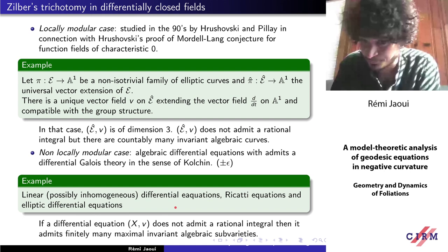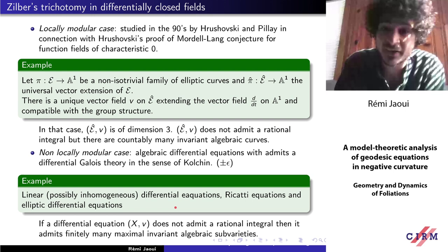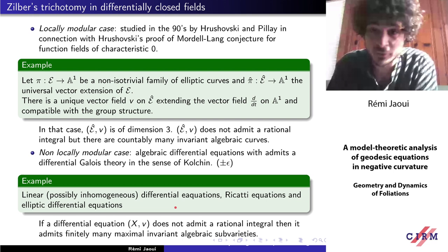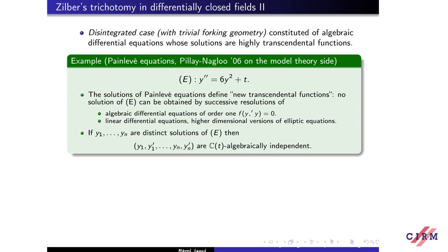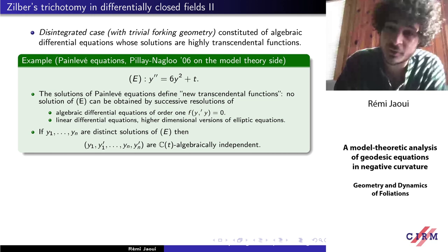This kind of result is used all the time in the model-theoretic interpretation of differential Galois theory. The third class — which I'm going to talk about mainly — is called disintegrated differential equations, or differential equations with trivial forking geometry. The intuition is that they consist of algebraic differential equations whose solutions are highly transcendental functions. To express this, let me give the example of Painlevé equations.